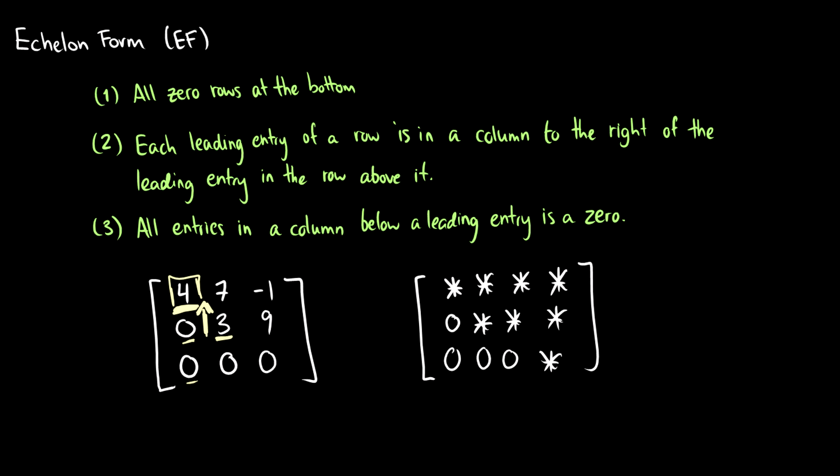As a rough example on the right here, these stars mean they can be any number that's not zero or they could be zero. But these in purple are the leading entries of the columns. We can see that these follow the conditions. The zeros are at the bottom, and if we have a pink box we have zeros below it, and anything to the right of the pink box can be whatever it wants.